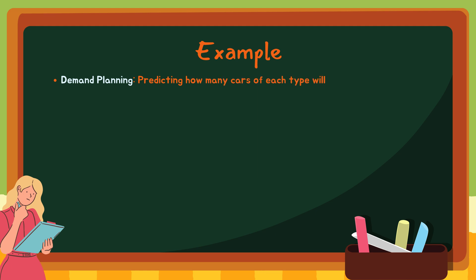First, demand planning. You forecast the demand for different car models for the next few months. Second, material requirements planning. You calculate the exact number of parts needed for each car and schedule their delivery.